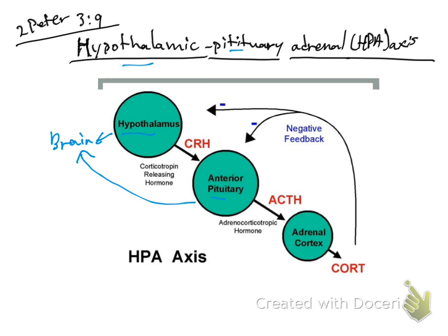What are the hormones that come from the hypothalamus? Something to remember: hormones from the hypothalamus usually have the word 'releasing' in them. In this case, we're going to focus on just one hormone, which is the corticotropin releasing hormone, or CRH, released by the hypothalamus. CRH travels to the anterior pituitary gland.